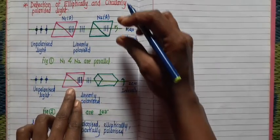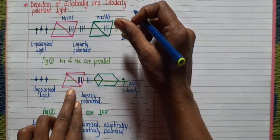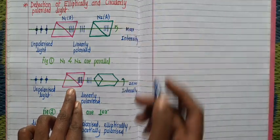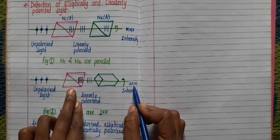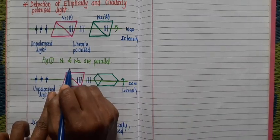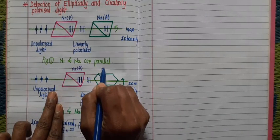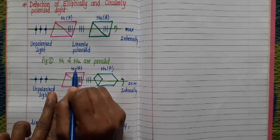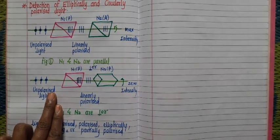In the second case, if we rotate the analyzer slowly, at one point we observe that the intensity of light is zero. Intensity of light is zero when the first Nicol prism (polarizer) and the second Nicol prism (analyzer) are mutually perpendicular to each other.